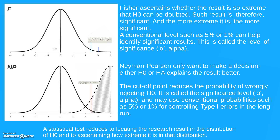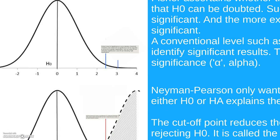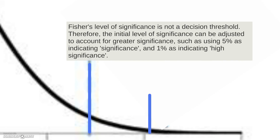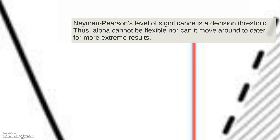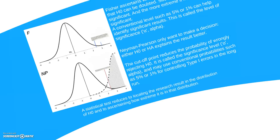Neyman-Pearson also calls it the significance level, or alpha, and also uses conventions of 5% or 1% — so it's quite similar in this sense. But Fisher's level of significance is not a decision threshold per se. The initial level of significance can be adjusted to account for greater significance later on. For example, you could start with a 5% significance level indicating significance, but then modify it if the result is small enough, cutting it to a 1% level indicating high significance. In the case of Neyman-Pearson, because it is a decision threshold, this alpha level cannot be flexible — you cannot move the goalposts to suit your research results.